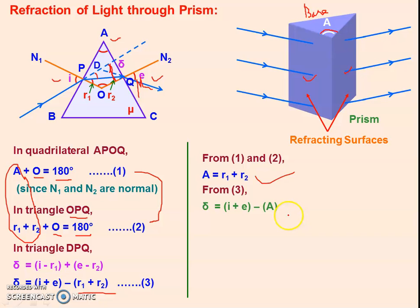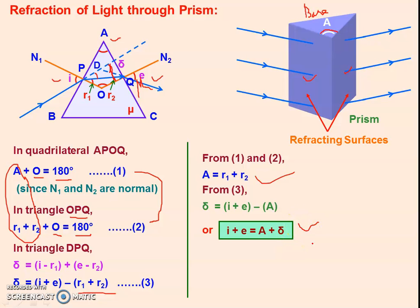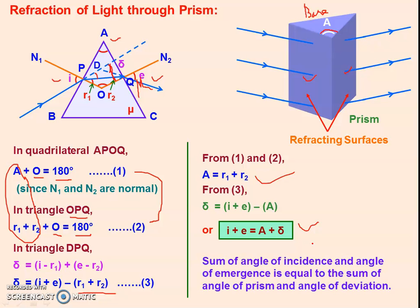So this equation becomes: when minus A moves to the left-hand side, it becomes positive. We can write it as I plus E equals A plus δ. This is the condition of refraction through a prism. In any prism, this condition holds — whenever a ray is refracted through a prism, I plus E equals A plus δ.